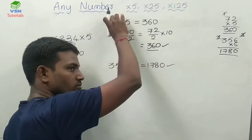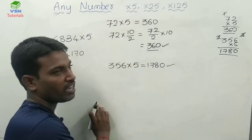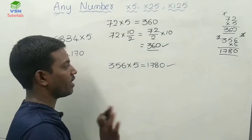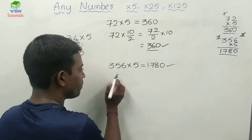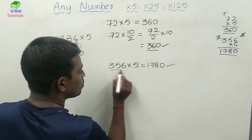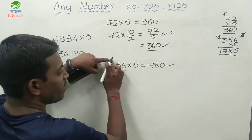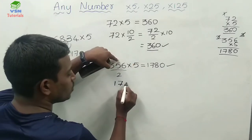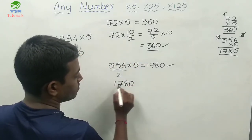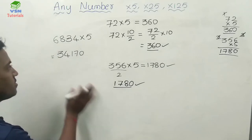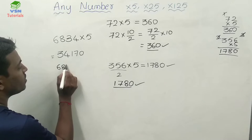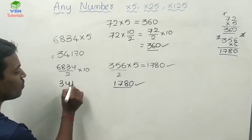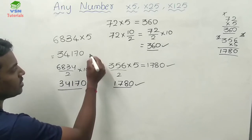Whenever a number is to be multiplied by 5, make the number half and multiply by 10. Apply the same logic to 356: divide by 2. Working through the digits: 356 divided by 2 gives 178, and 178 into 10 is 1780. Similarly, 6834 divided by 2 gives 3417, and 3417 into 10 is 34170. Like this, you get the answers.